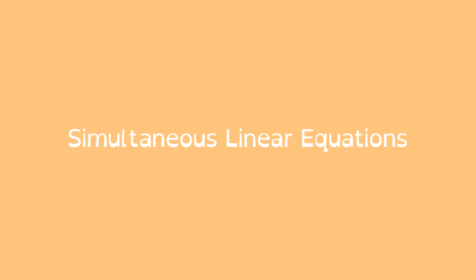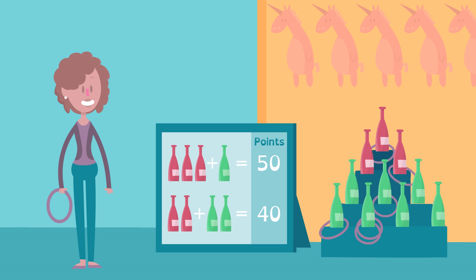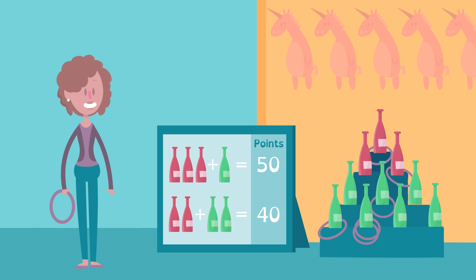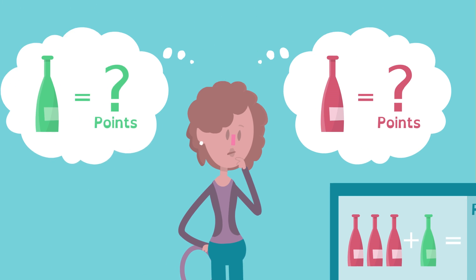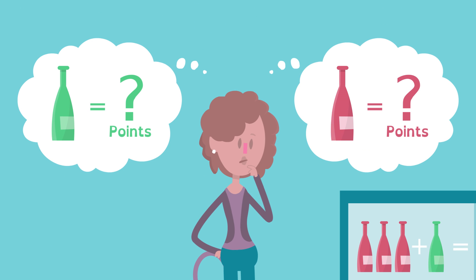Here's how simultaneous linear equations work. Kate can win points by tossing rings around these bottles. Different color combinations are worth different points. Kate wants to know how much each bottle is worth on its own.